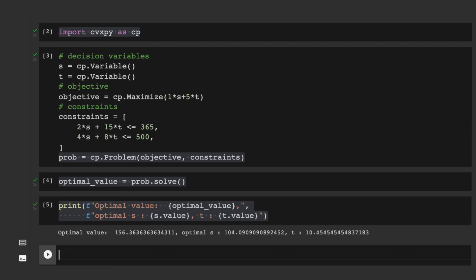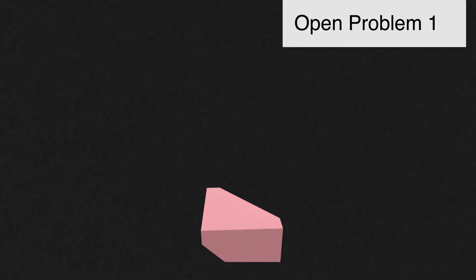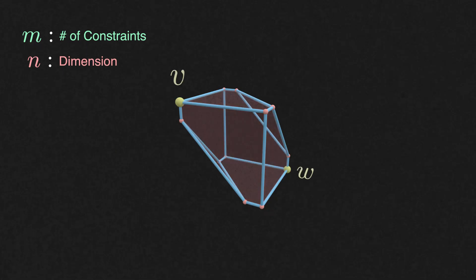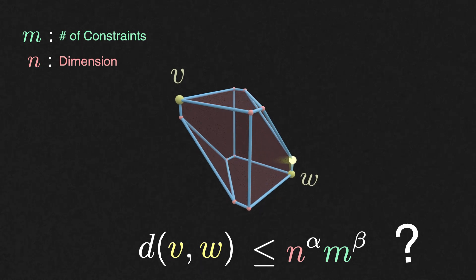I will end this video with two major, simple-to-state, open questions related to linear programs. First, the Hirsch conjecture. For a polyhedron in dimension n defined by m constraints and for two arbitrary vertices v and w, can we bound the number of steps it takes to go from v to w with a polynomial in n and m?